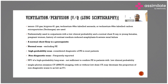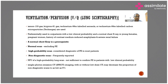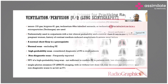The VQ scan gives three results: normal scan, high probability scan, or non-diagnostic scan. A normal scan will exclude PE because if perfusion is normal, pulmonary embolism is reasonably ruled out. If the perfusion scan shows defects and the ventilation scan also shows defects, it becomes a non-diagnostic scan — which occurs in around 40 to 50 percent of cases.